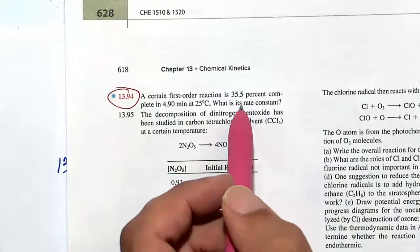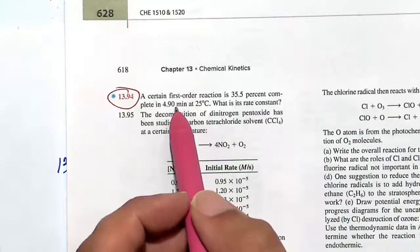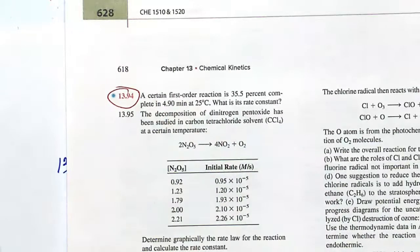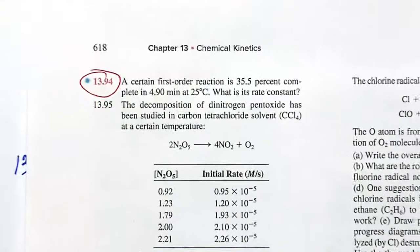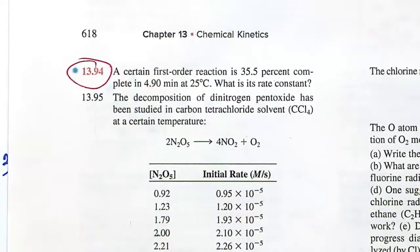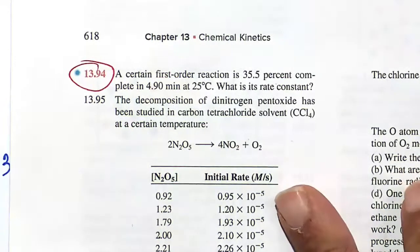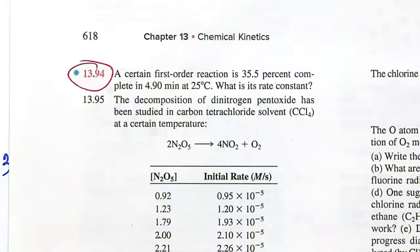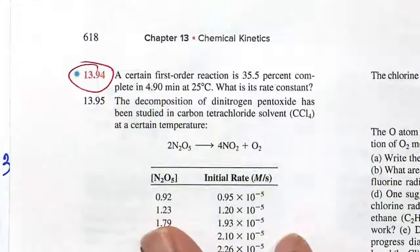So 35.5% complete in 4.90 minutes at 25 degrees C. Obviously, a rate constant is quoted at a specific temperature. That's a theme that we want to sort of pound and reiterate over and over again. Change the temperature, you're going to change the rate constant. Well, what is this rate constant?